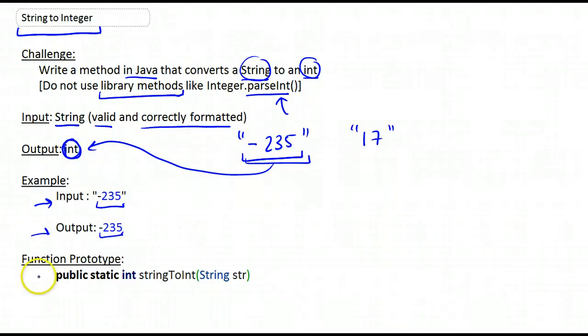And this is a function prototype or method prototype that we're giving you right here, and you're supposed to implement it. So this is the return type, an integer, you're supposed to return an integer, and the method is called stringToInt, and you're being passed a string. So this is a function.